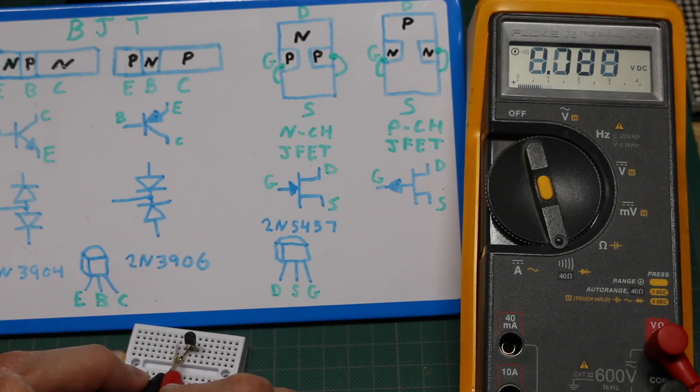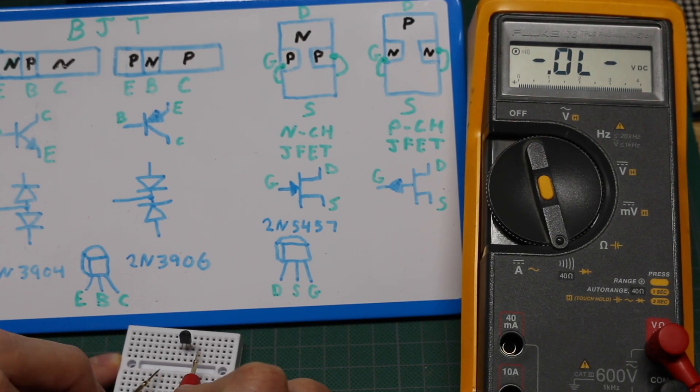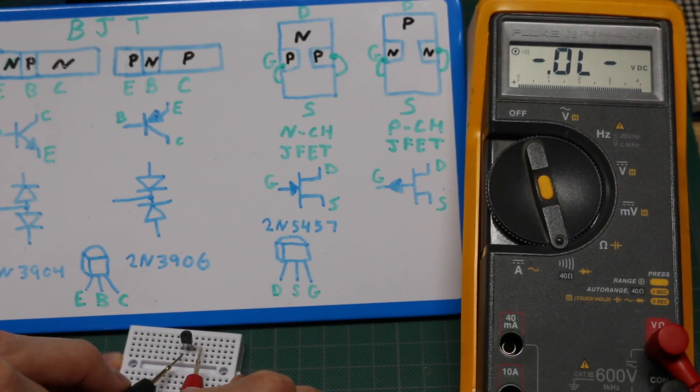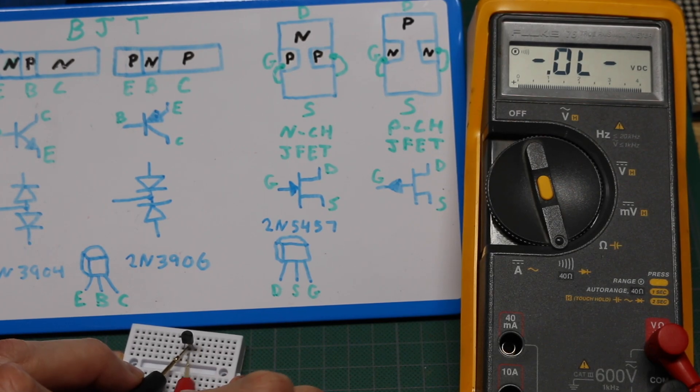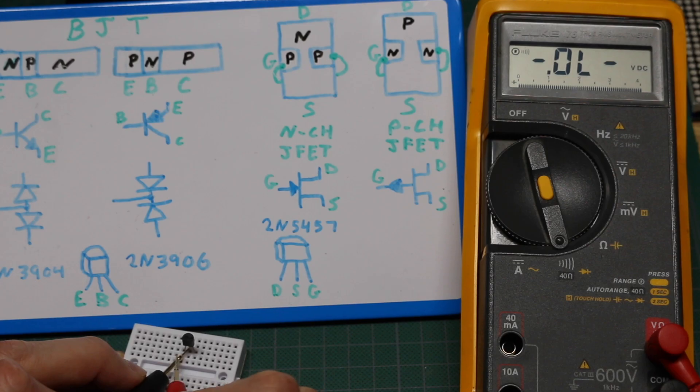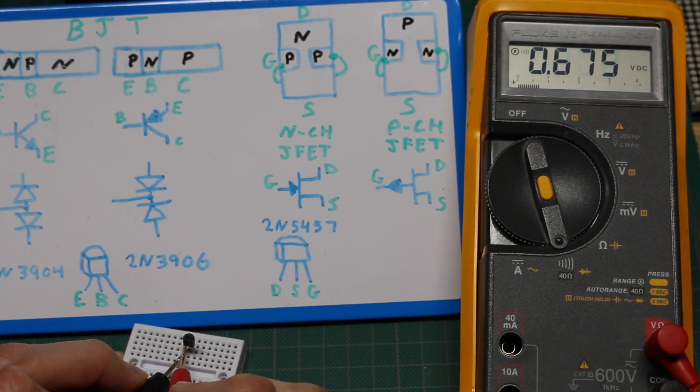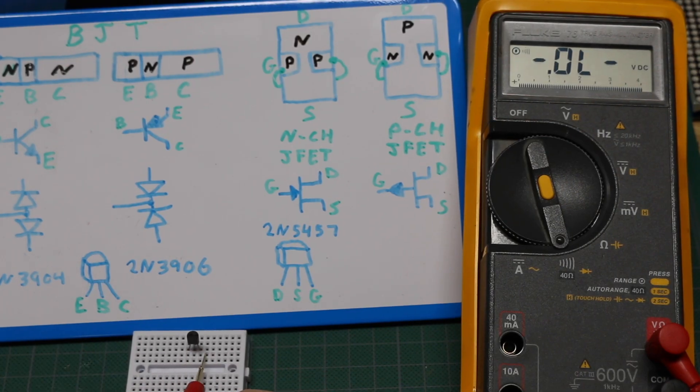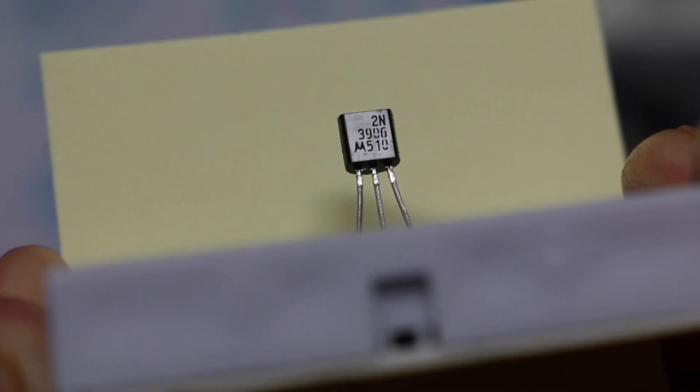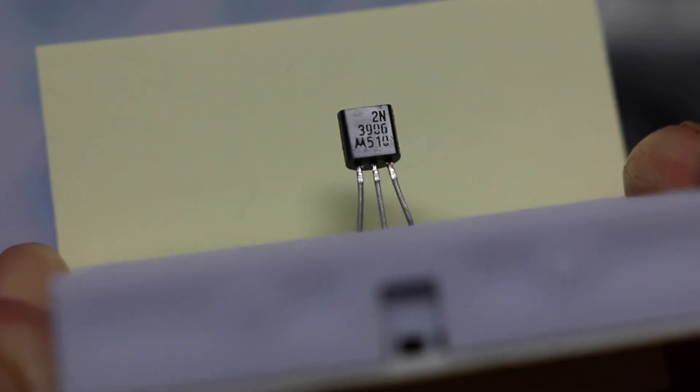So the leftmost is emitter, the center is base, and the right is collector. And because the base has a negative probe to get a forward bias with either emitter or collector being positive, it's PNP. It's a 3906 PNP emitter base collector.